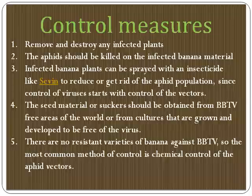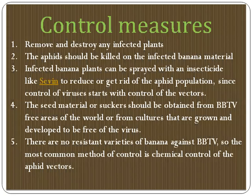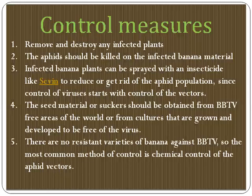Let us see the control measures for bunchy top of banana. Remove and destroy any infected plants in the field. Aphids on infected banana plants can be sprayed with an insecticide such as cypermethrin to reduce or eliminate the aphid population, since control of the virus starts with control of the vector. Seed material or suckers should be obtained from BBTV-free areas of the world.